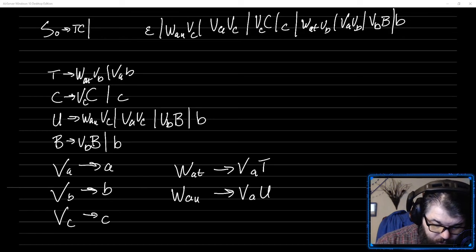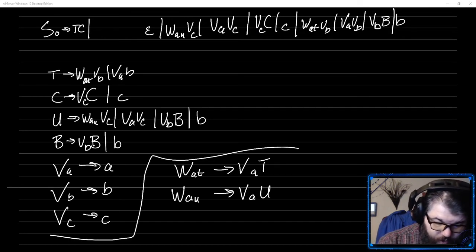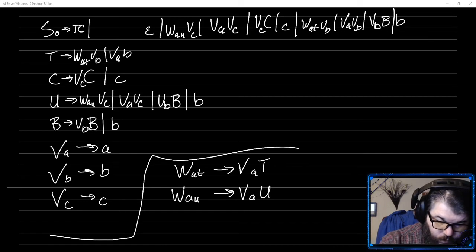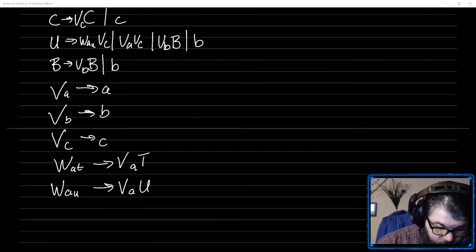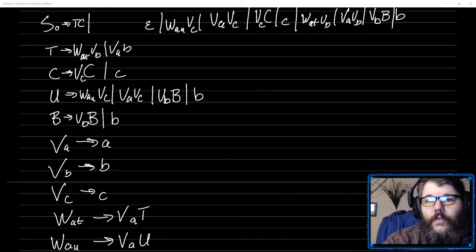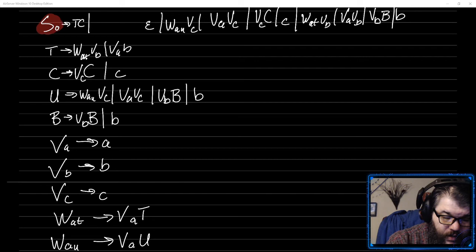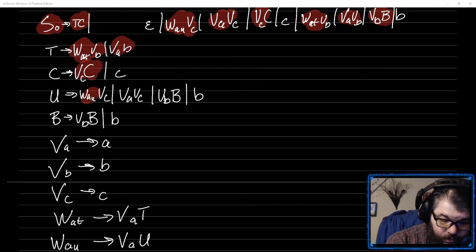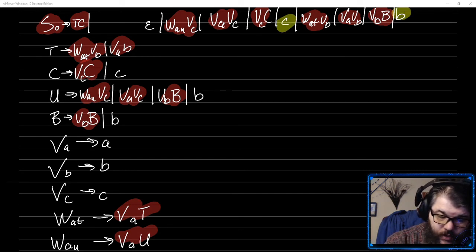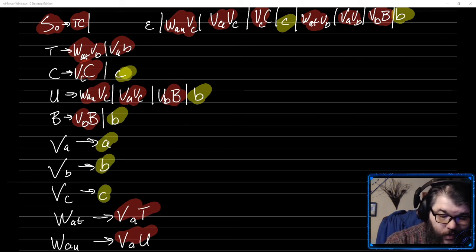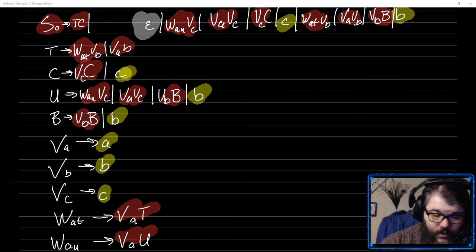This is now in Chomsky normal form. Every rule goes to either two variables — you can verify that all of these are two-variable rules — or it goes to a single terminal. The only rule that's allowed to go to epsilon is the start state.